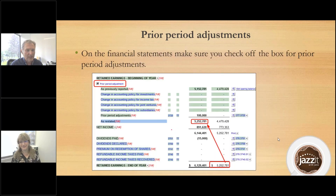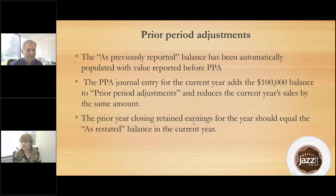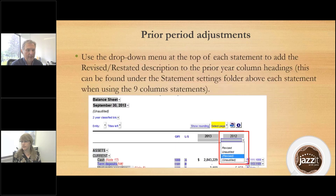This screenshot is critical — we're basically making sure that the restated prior year retained earnings agrees to the opening of the current year. And there you go — we're just changing the heading on the column for the balance sheet, income statement, and cash flow.